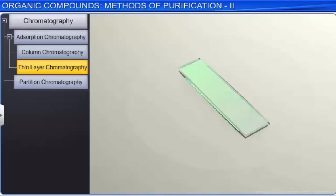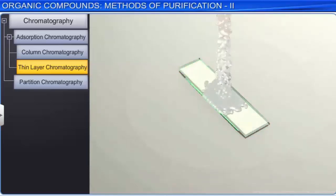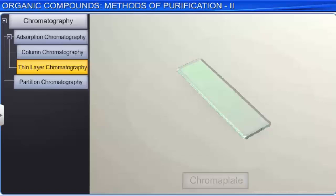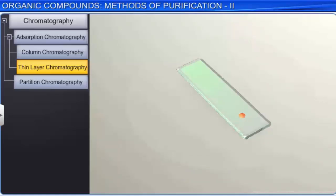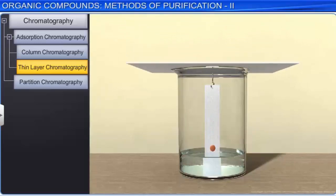Thin layer chromatography involves the separation of substances in a mixture using a glass plate coated with an adsorbent. A thin layer of adsorbent, preferably alumina or silica gel, acts as the stationary phase and is coated on the glass plate, known as the TLC plate or chroma plate. A small spot of the solution of the mixture to be separated is applied about 2 cm above one end of the glass plate. The plate is placed in a closed container containing the eluent. As the eluent moves up the plate, it causes the components to distribute between the adsorbent and the moving solvent, thus separating the components.